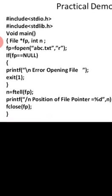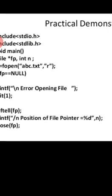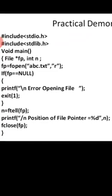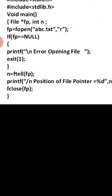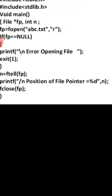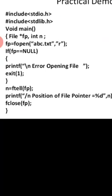The key thing to concentrate on in this program is that we have opened the file in read mode. Opening a file in read mode means it cannot create a new file — it will only open a pre-existing file. ftell will then tell you the position of the file pointer. If there is no file, it will report an error while opening the file.